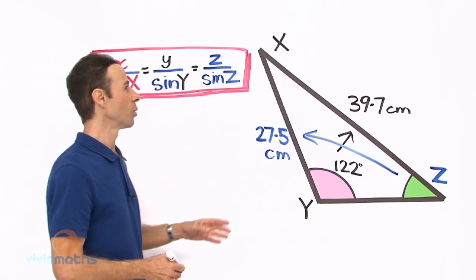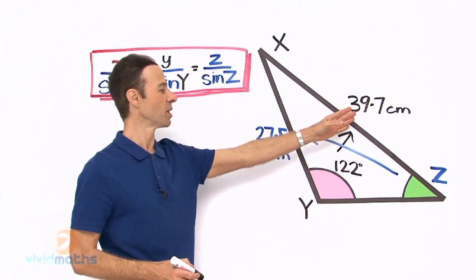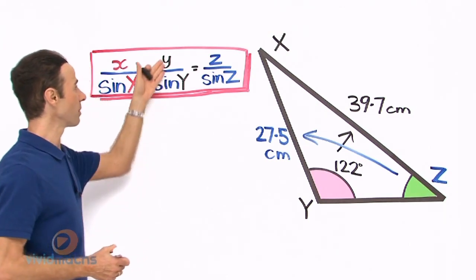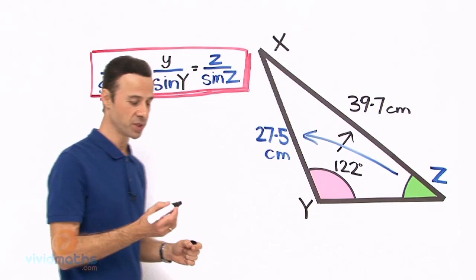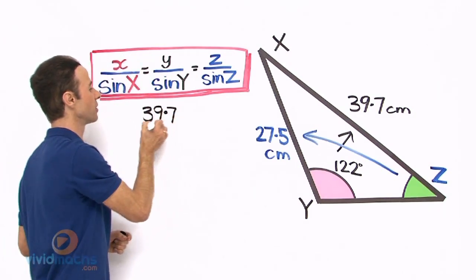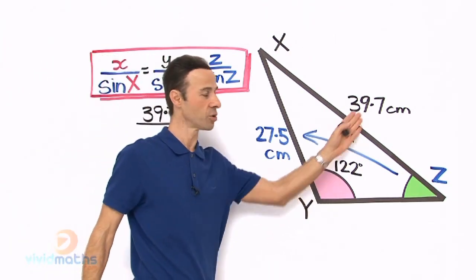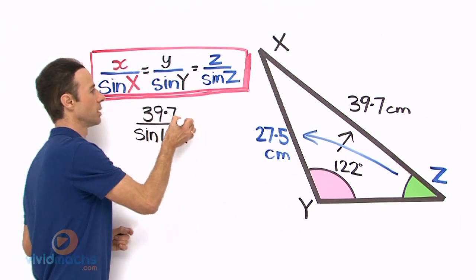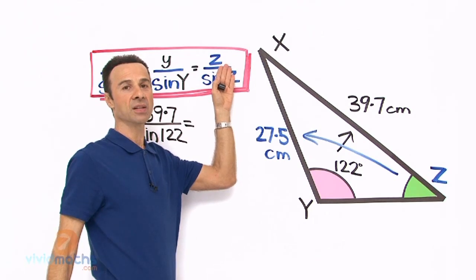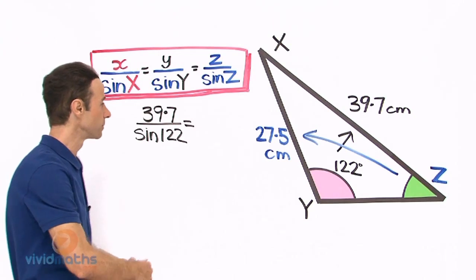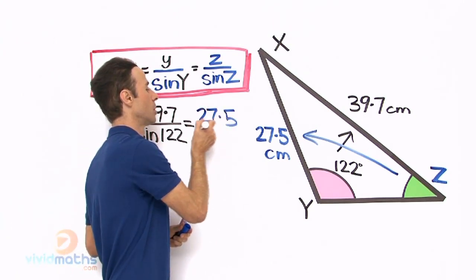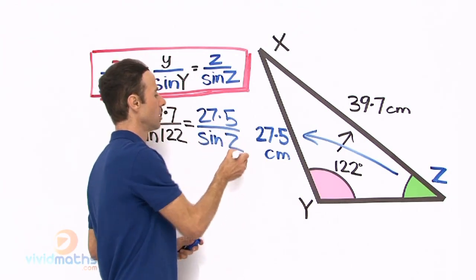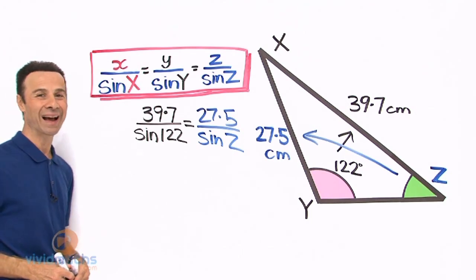We have 39.7 cm opposite angle Y, so we start with little y over sine Y. Little y is 39.7, and the angle Y directly opposite is 122 degrees. That equals little z, which is 27.5, all over sine Z — the missing angle. There are our three known pieces of information and one unknown.